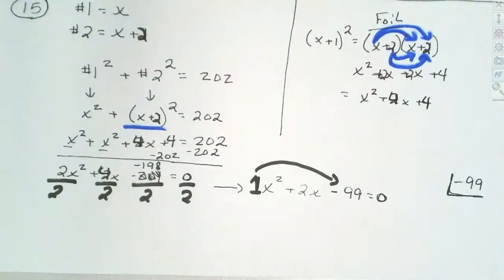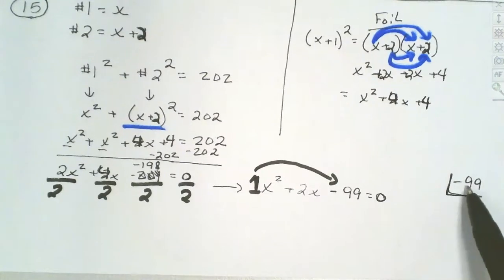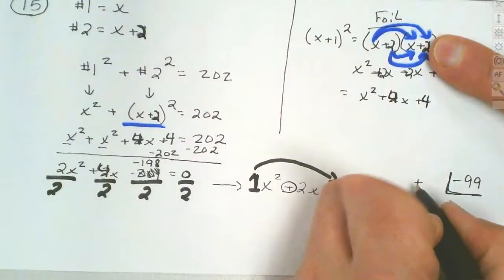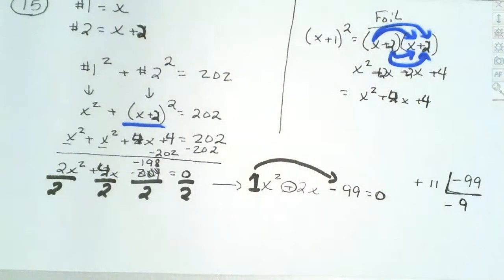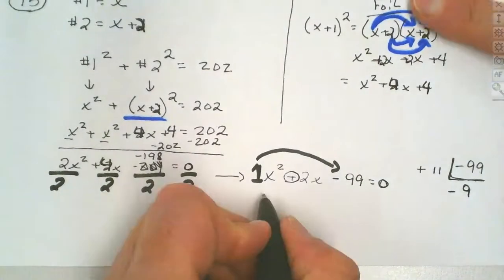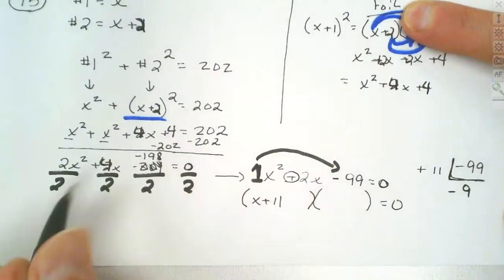When we look at 99 and notice the digits are the same, there's an 11 in it. 99 divided by 11 is 9. Since it's negative, the larger number is positive and the smaller is negative — so we use positive 11 and negative 9. No grouping needed; we can jump directly to factors: x plus 11 and x minus 9.